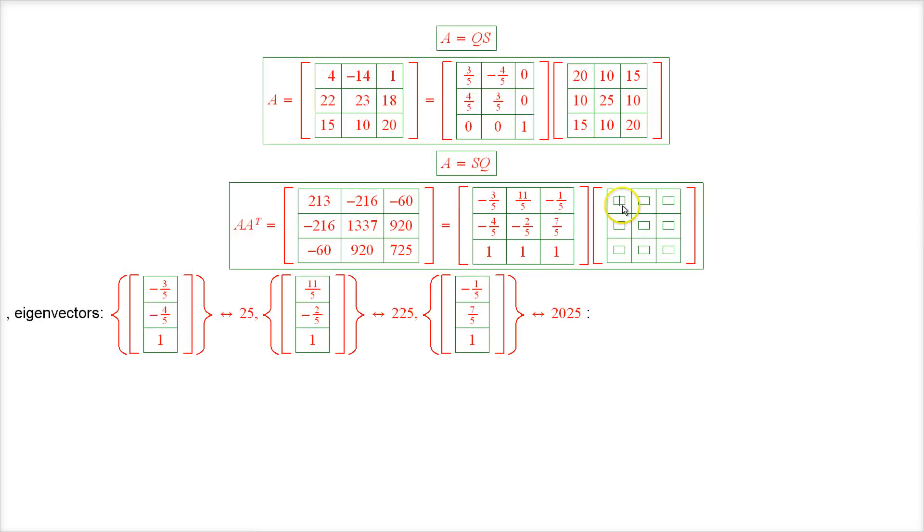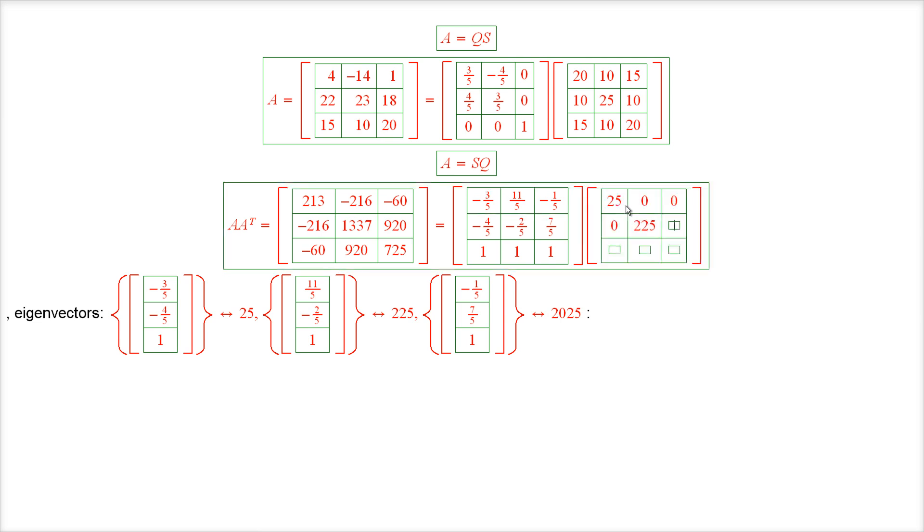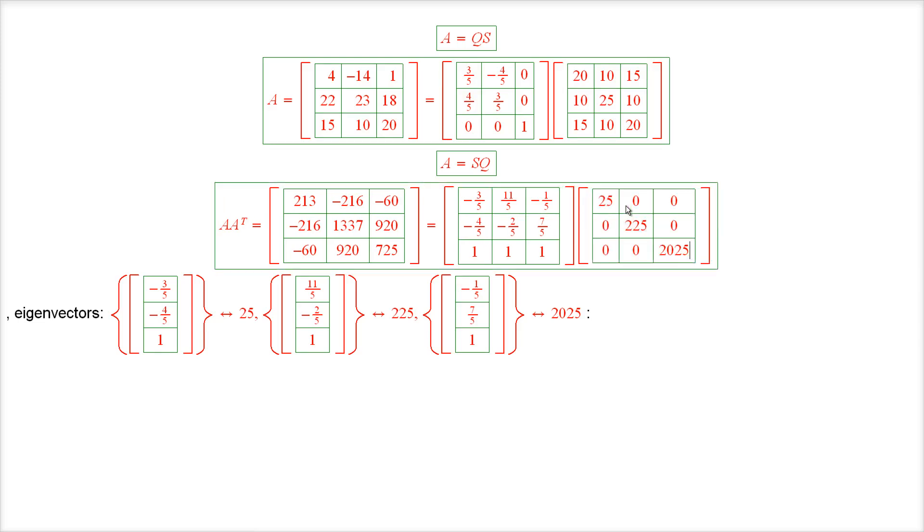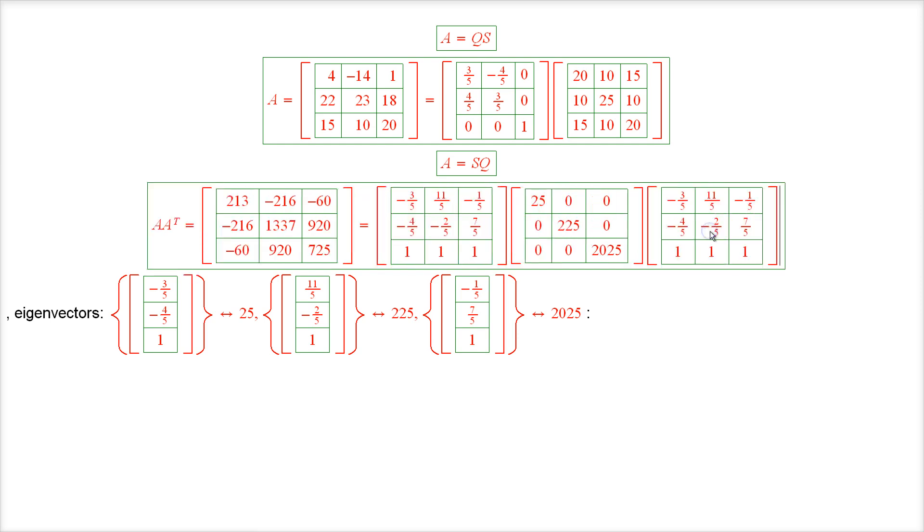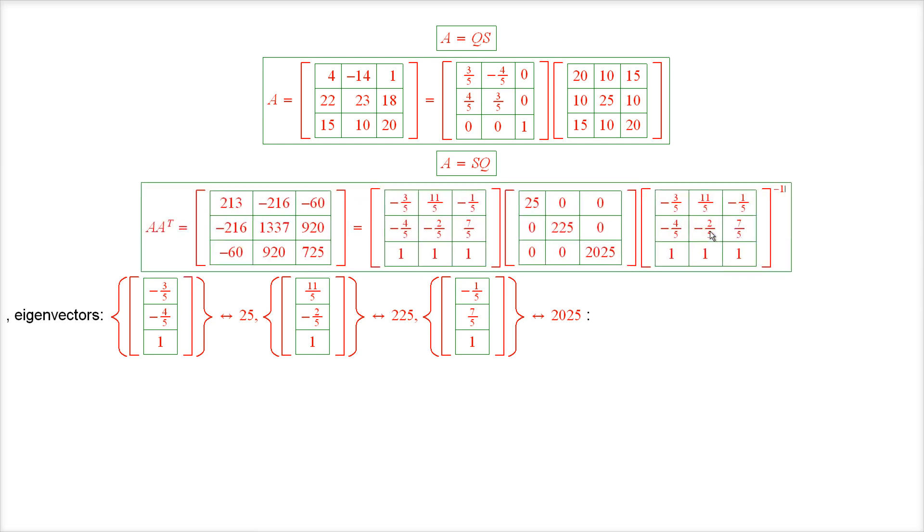And on the diagonal we have 25, 225, and 2025. And finally we have the inverse of the first matrix. So that's the eigenvalue decomposition of S squared.